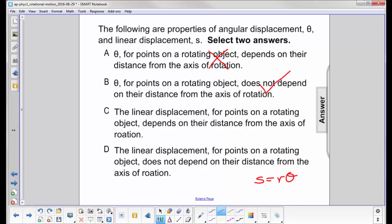The linear displacement S for points on a rotating object depend on their distance from the axis of rotation. Well, we know theta is constant and R is your distance from the axis of rotation. So if this goes up, S goes up, the arc length. So this is true.